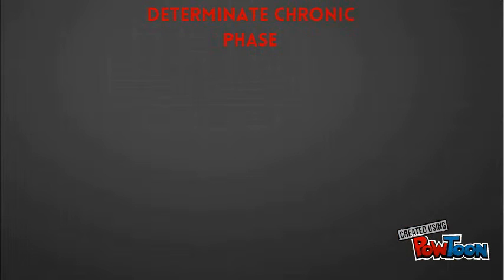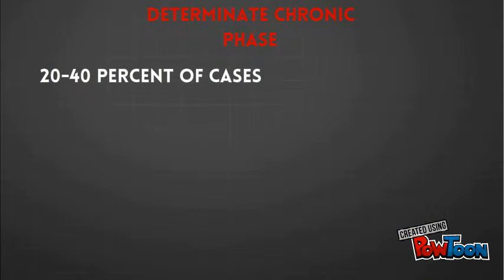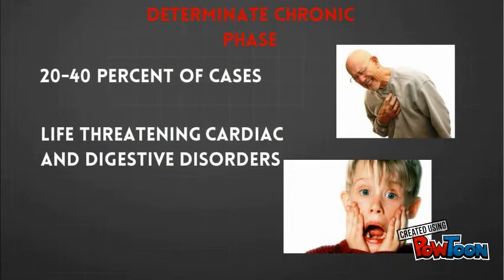Opposite of that is the determinate chronic phase. This affects the remaining 20 to 40% of cases and results in the development of life-threatening cardiac and digestive disorders.